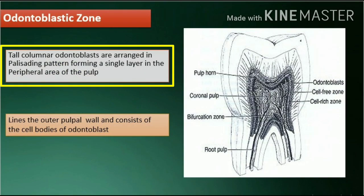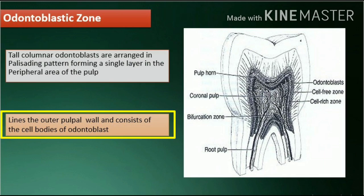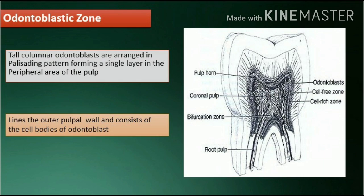Odontoblastic zone. Tall columnar odontoblasts are arranged in a palisading pattern, forming a single layer in the peripheral area of the pulp. This zone lines the outer pulpal wall and consists of the cell bodies of odontoblasts.